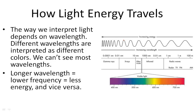Here you can see a demonstration — this little tiny amount right here is our visible light. We actually can't see all of these wavelengths, but we can see this little tiny amount of visible light. Here you can see what colors they would produce.